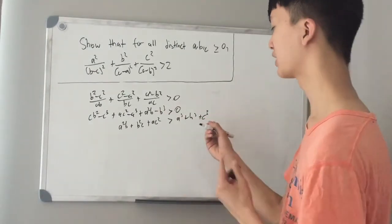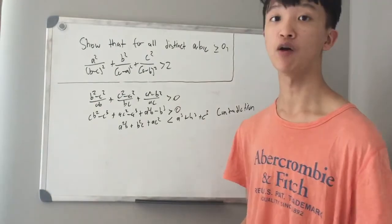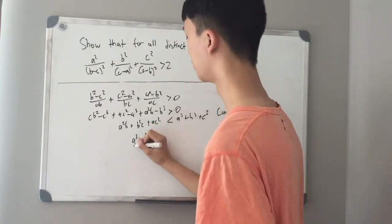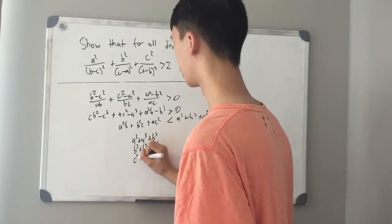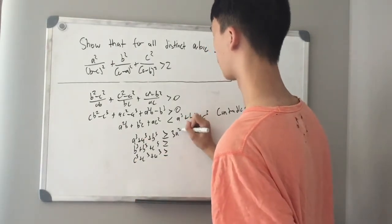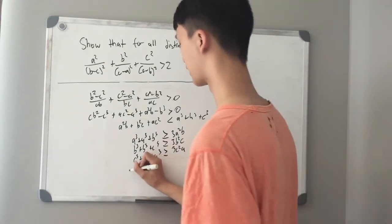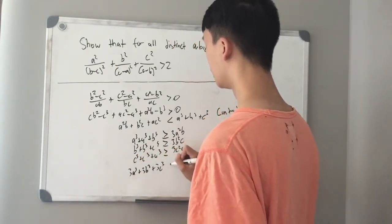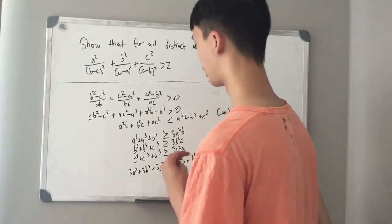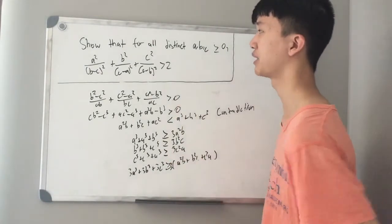But now we are going to contradict our contradiction, because we can show that a²b + b²c + ac² is actually smaller than a³ + b³ + c³. We use AM-GM with three equations: a³+a³+b³ ≥ 3a²b, b³+b³+c³ ≥ 3b²c, and c³+c³+a³ ≥ 3c²a. Adding all three gives 3a³+3b³+3c³ ≥ 3(a²b + b²c + c²a), so a³+b³+c³ ≥ a²b+b²c+c²a. This contradicts our assumption, so we have contradicted our contradiction, proven the inequality, and we are done.